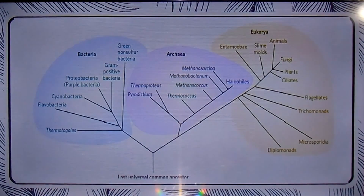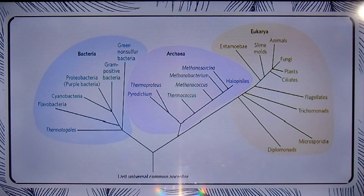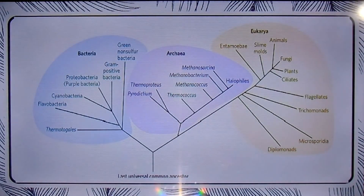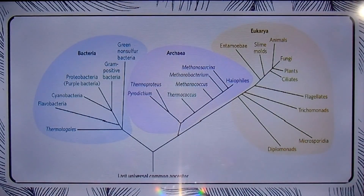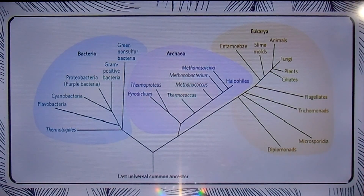Many of the archaea, recognized as a distinct domain by Carl Woese in 1980, inhabit extreme environments like salt lakes, hot springs, highly acidic bogs, and the ocean depths. Archaea and bacteria diverged early in evolution. All eukaryotic organisms, which make up the third domain Eukarya, evolved from the same branch that gave rise to archaea, and are therefore more closely related to archaea than to bacteria.